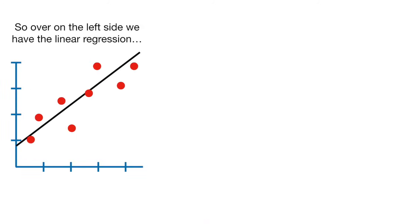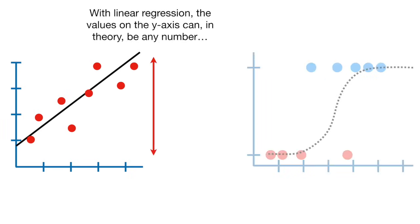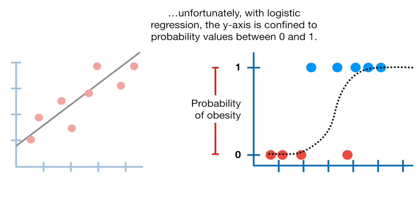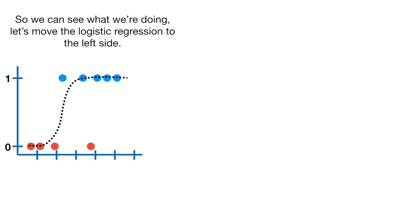On the left side we have linear regression, and on the right side we have logistic regression. With linear regression, the values on the y-axis can, in theory, be any number. Unfortunately, with logistic regression, the y-axis is confined to probability values between 0 and 1. To solve this problem, the y-axis in logistic regression is transformed from the probability of obesity to the log odds of obesity, so that just like the y-axis in linear regression, it can go from negative infinity to positive infinity.